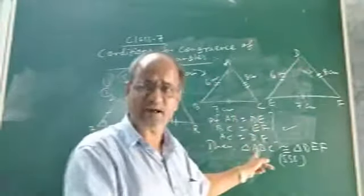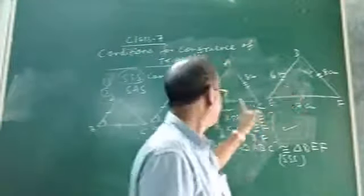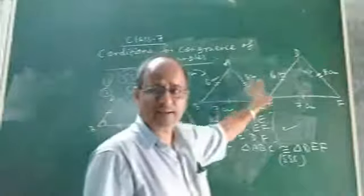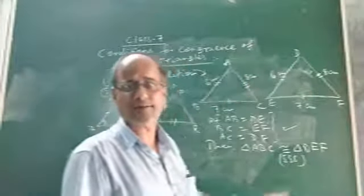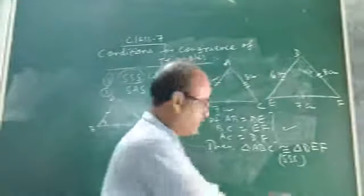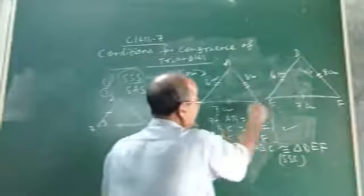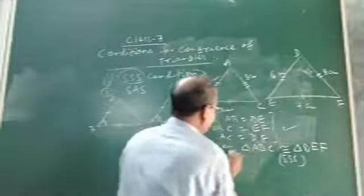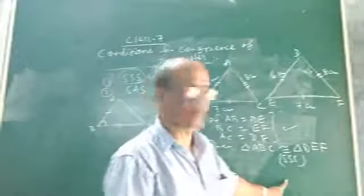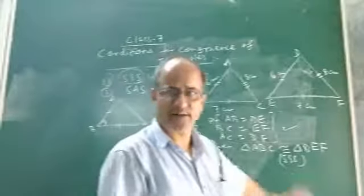If this condition is satisfied, then we say that the two triangles are congruent. Mathematically: if AB equals DE, BC equals EF, and AC equals DF, then triangle ABC is congruent to triangle DEF. This is called the side-side-side congruence condition or congruence criterion.